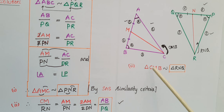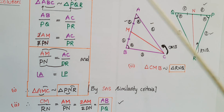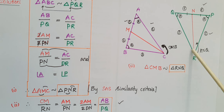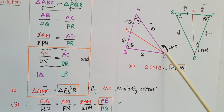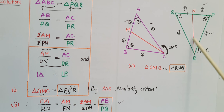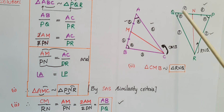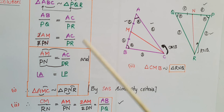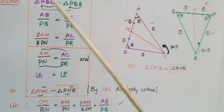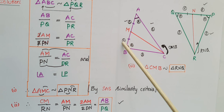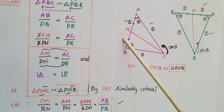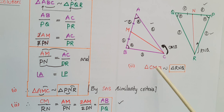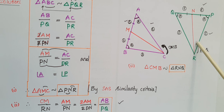For the third question, triangle CMB: we already proved that triangle AMC is similar to triangle PNR. So we can directly write triangle CMB is similar to triangle RNQ, because angle B equals angle Q from these similar triangles — corresponding angles are equal and corresponding sides are in the same ratio. Therefore, triangle CMB is similar to triangle RNQ.